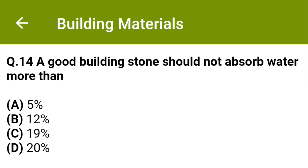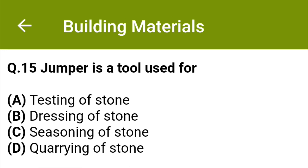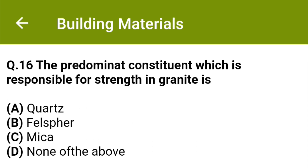A good building stone should not absorb water more than Option A 5%, Option B 12%, Option C 19%, Option D 20%. The correct answer is Option A, 5%. Jumper is a tool used for Option A testing of stone, Option B dressing of stone, Option C seasoning of stone, Option D quarrying of stone. The correct answer is Option D, quarrying of stone.